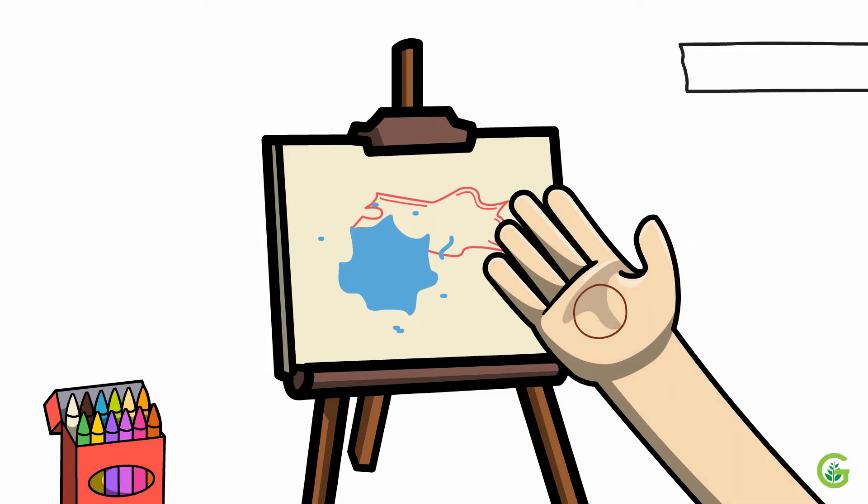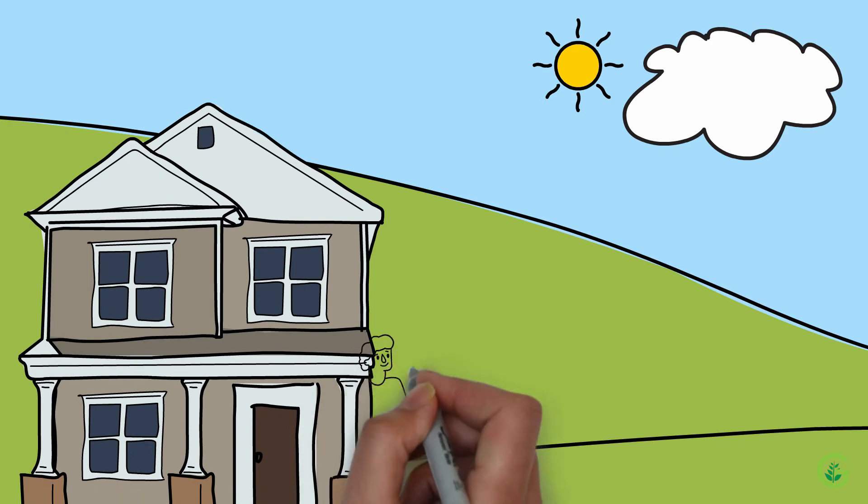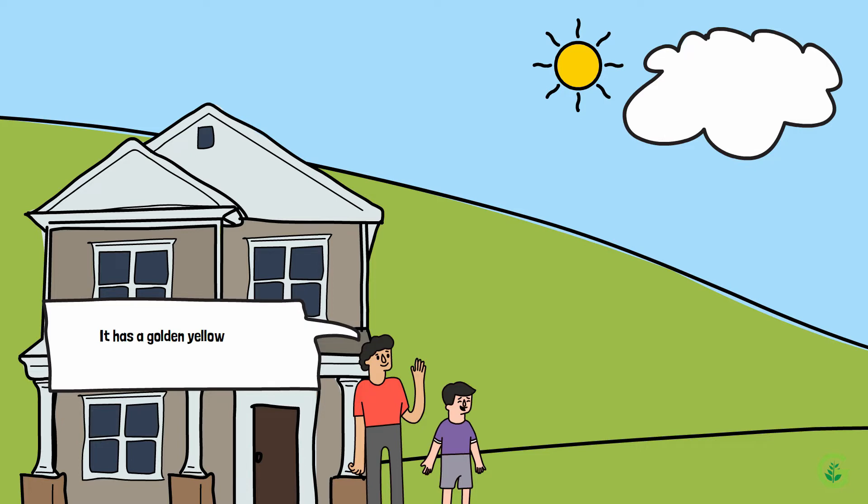Then Kay asked, 'What is the color of the sun?' The young man brought Kay outside, moved his hand and body towards the ray of the sun, and said, 'It has a golden yellow color. It brings warmth and gives us strength.'